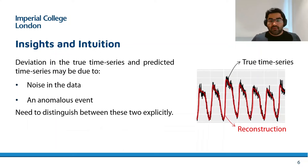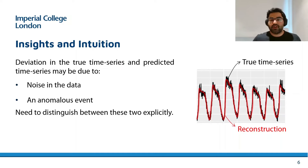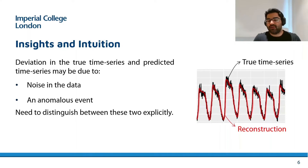The second main intuition in our work is related to the noise in the time series data. When we produce a reconstruction of an input time series, it is possible that the deviations may be due to noise in the data or an actual anomalous event in the system.